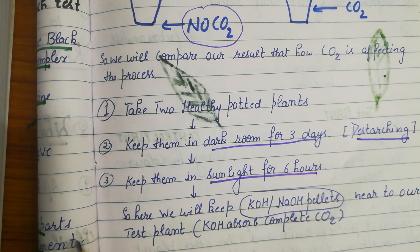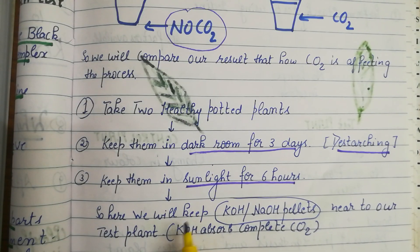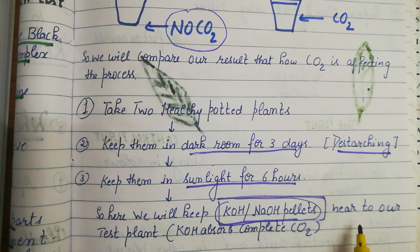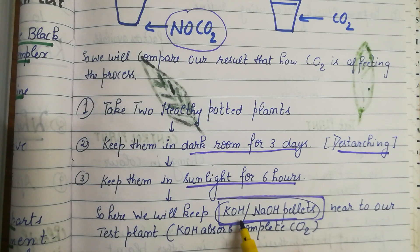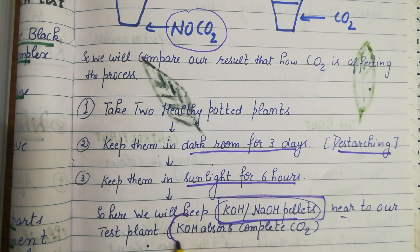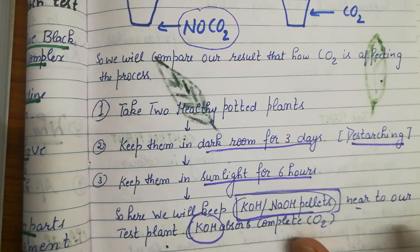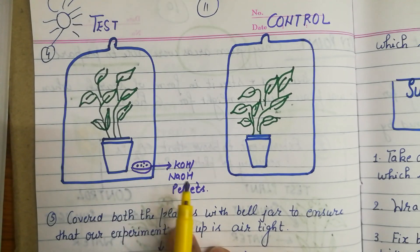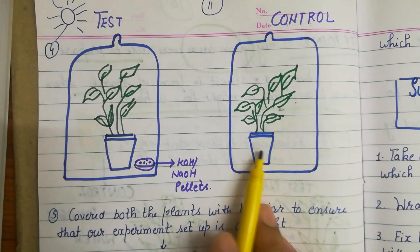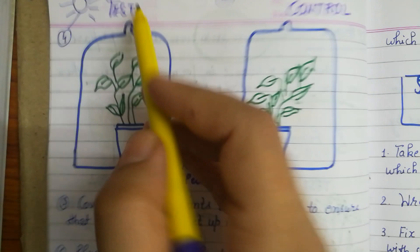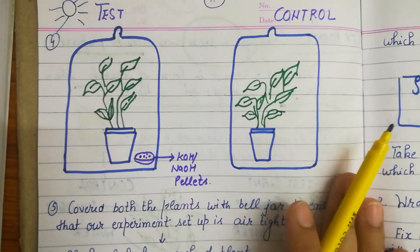Here we are doing something additional: we are keeping KOH (potassium hydroxide) or NaOH pellets — small tablet-like pellets — near our test plant. The reason to keep KOH is that it absorbs all carbon dioxide. When we keep the plant in sunlight for six hours, the KOH or NaOH pellet is placed in the test plant's setup, but not in the control plant.